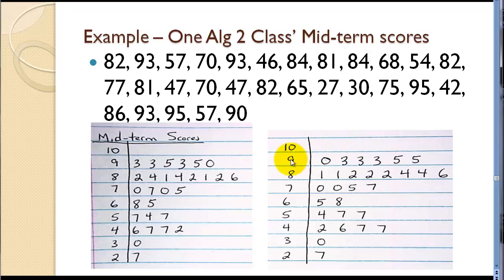If we were going decreasing, this would be 90. Well, actually decreasing would go right to left. So 95, 95, 93, 93, 93, etc. On down to 27, or counting from the bottom, we're going left to right: 27, 30, 42. So that's a stem and leaf plot.